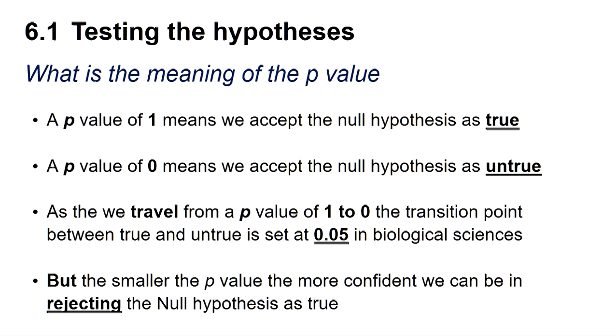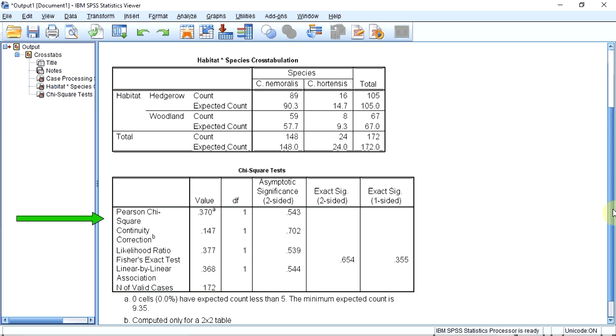The smaller the p-value below 0.05, the more confident we can be in rejecting the null hypothesis. So a value of 0.543 indicates that we cannot reject the null hypothesis that there is no difference in the distribution of the two snail species between hedgerow and woodland.